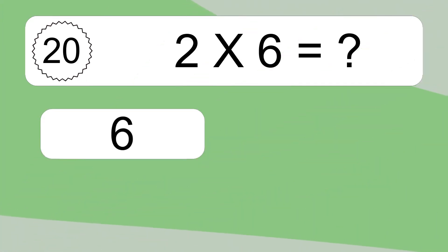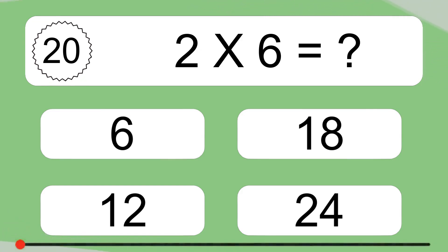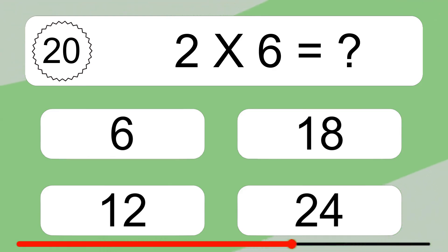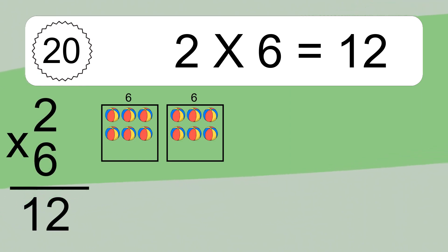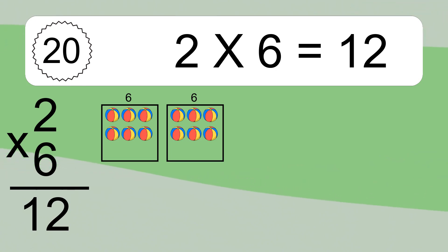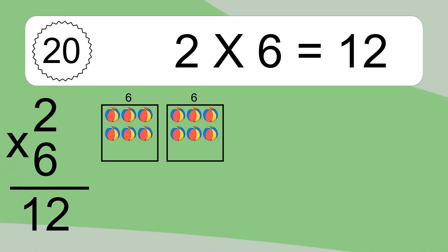2 times 6 equals what? 2 times 6 equals 12. We have 2 boxes, and each box has 6 colorful balls inside. If you count all the balls in all the boxes together, you will have 2 times 6 balls. This equals 12 balls.